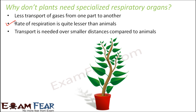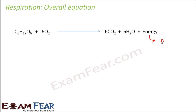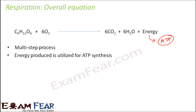Transport in plants is needed over smaller distances compared to animals. Whatever gas — oxygen or carbon dioxide — needs to be transported, that transportation happens over a comparatively smaller distance. Overall, in the respiration process, glucose gets oxidized to produce carbon dioxide, water, and energy. This energy is in the form of ATP molecules. Respiration is a multi-step process, and the energy produced is utilized for ATP synthesis — the energy currency of the cell.